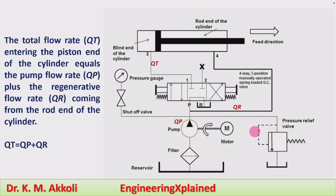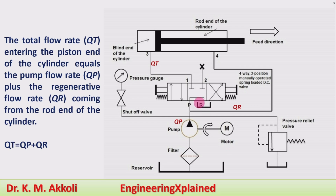Here this is the circuit which is commonly used for the regenerative cylinder. The regenerative cylinder consists of a double acting cylinder and it has the reservoir, filter, pump, motor, and the 4-by-3 direction control valve, pressure gauge, setup valve, and pressure relief valve. These are the different parts of the regenerative cylinder circuit.